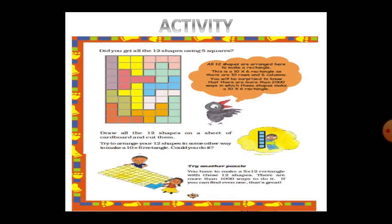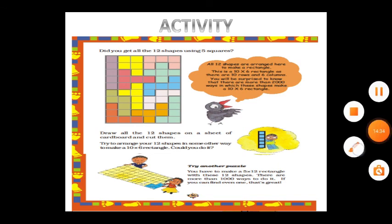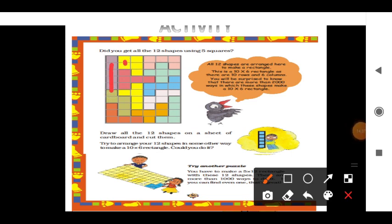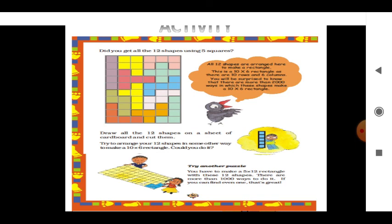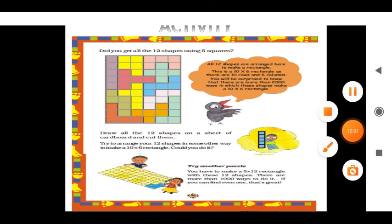For the activity, take one square lined book and draw different shapes - see how many shapes there are: one, two, three, four - like this. Color the shapes, cut them out, and after cutting all the shapes, arrange them back as they were originally. This is the activity - do it, as everything will carry marks. Thank you.